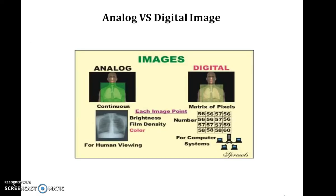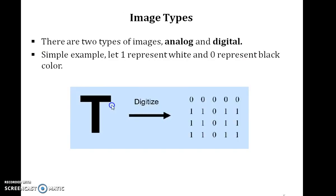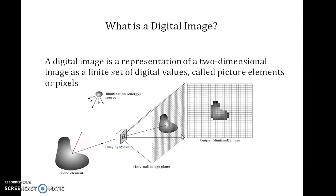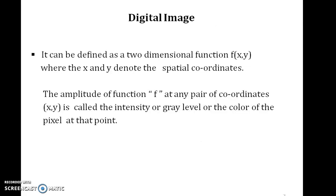This is a diagram which shows Analog versus Digital Image, where you can see an analog image as a continuous image, and here is a digital image which has been represented in the form of 1s and 0s. A digital image is nothing but a representation of a two-dimensional image as a finite set of digital pixel values called picture elements.